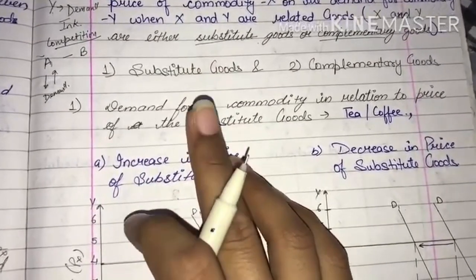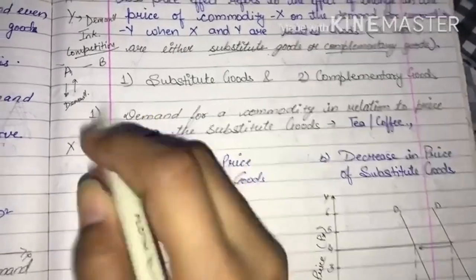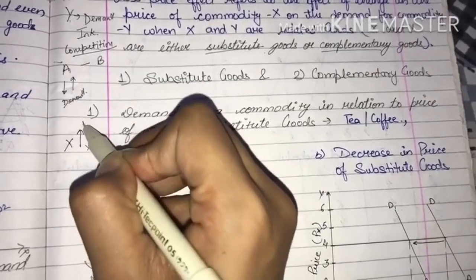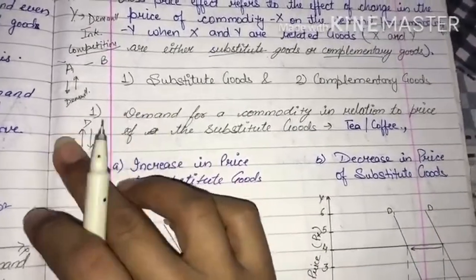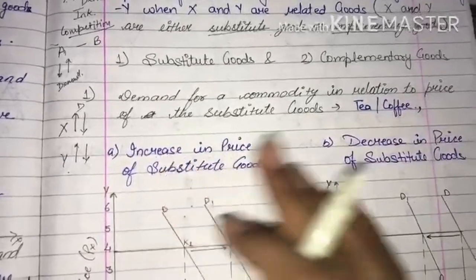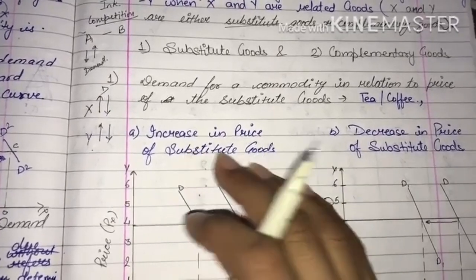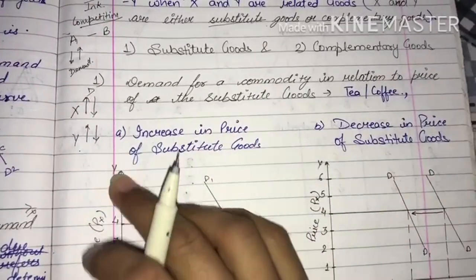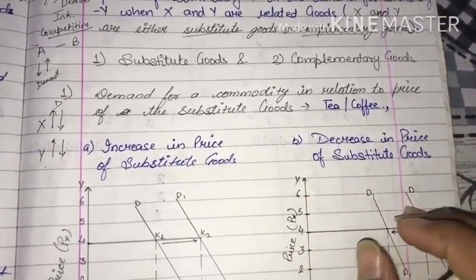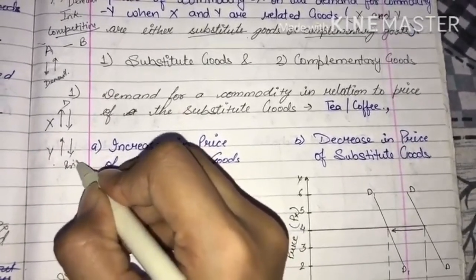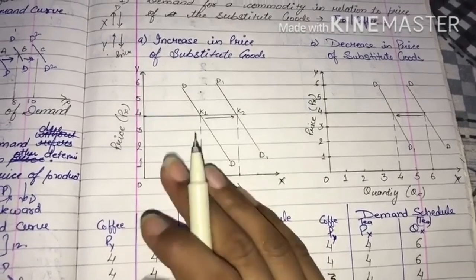As I told you, in related goods we have two options: substitute goods and complementary goods. First, I will start with substitute goods. Demand for a commodity in relation to price of substitute goods means if the substitute good's price increases or decreases, what change occurs in your product X's demand?